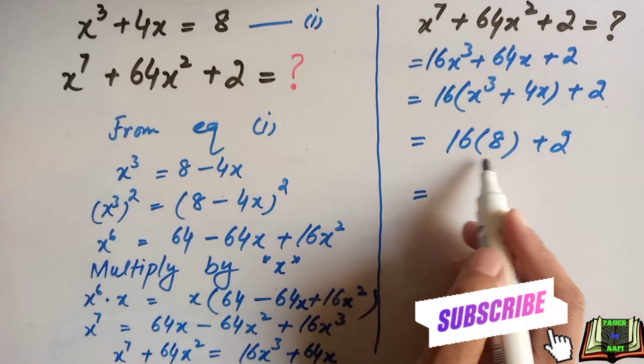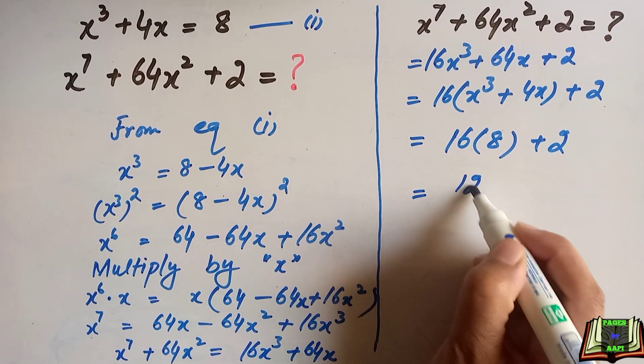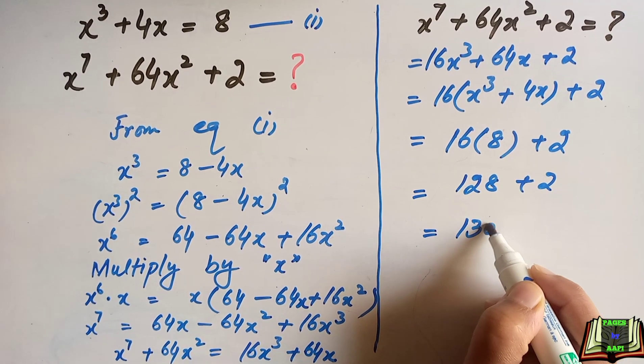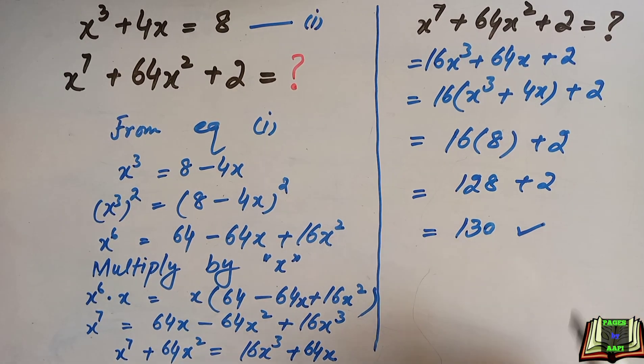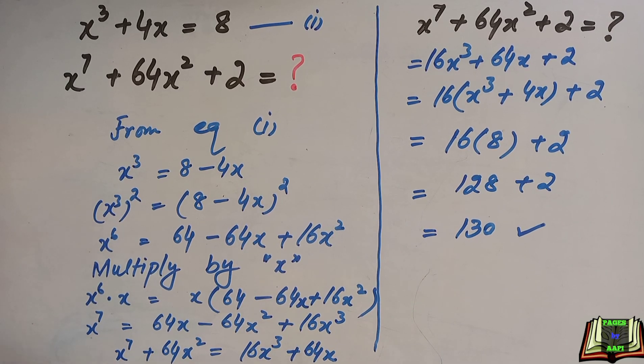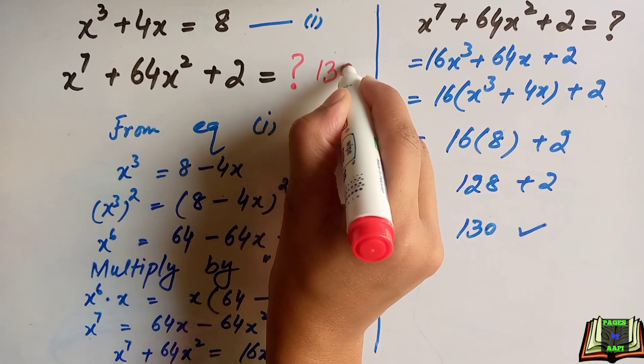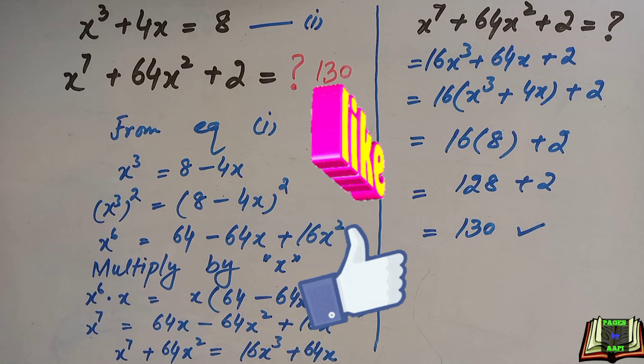If we multiply 16 · 8, we get 128 + 2 = 130. So this is the required answer. The value of x⁷ + 64x² + 2 equals 130.